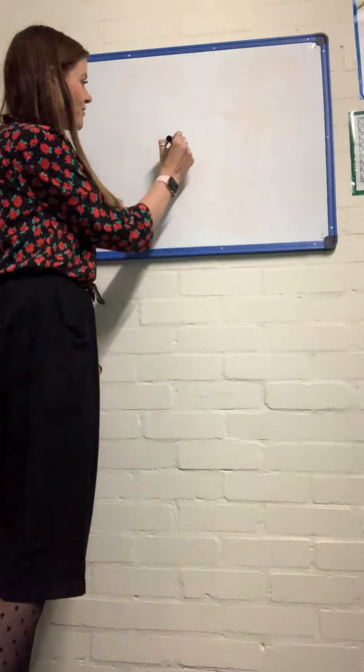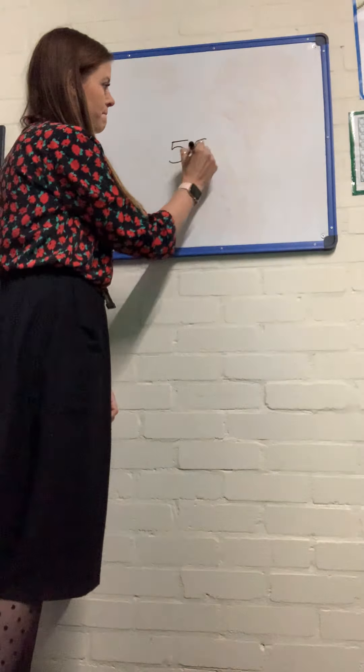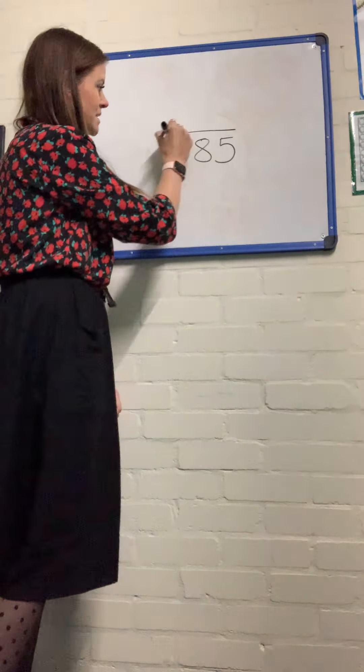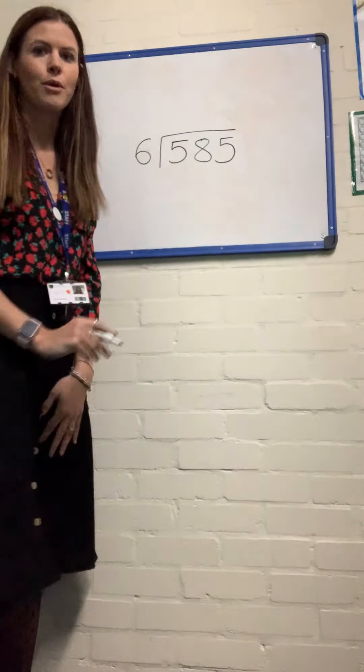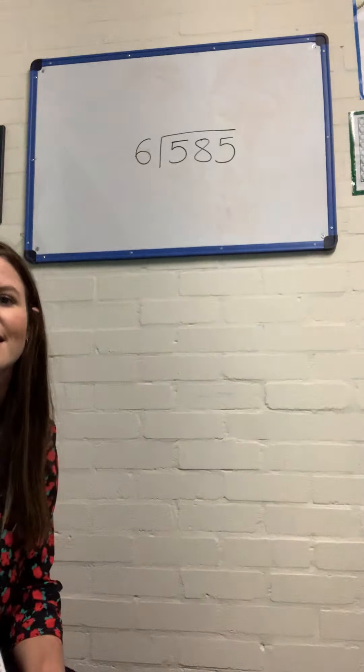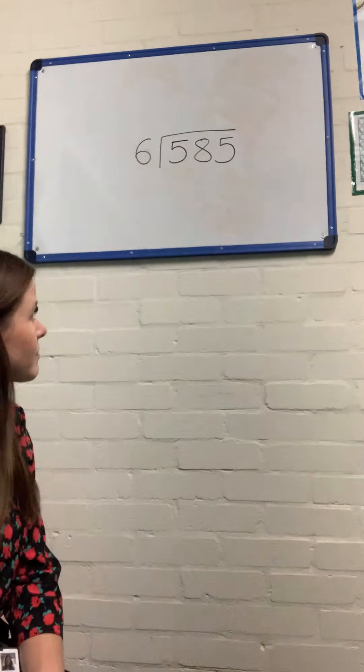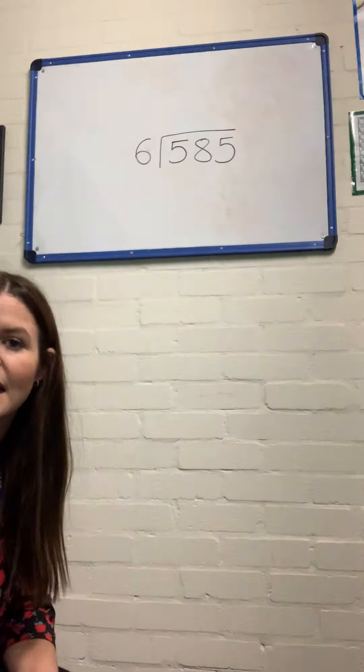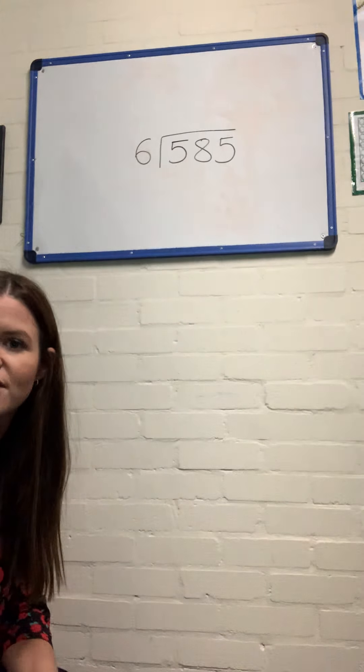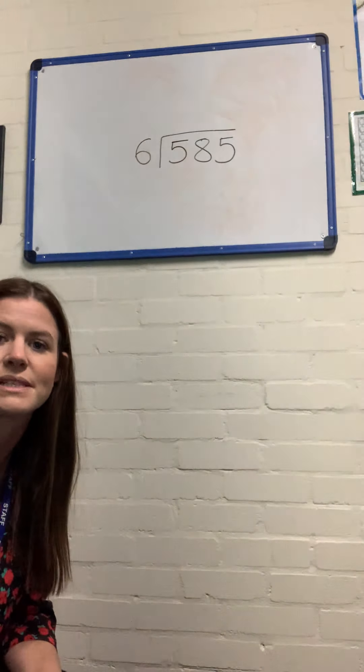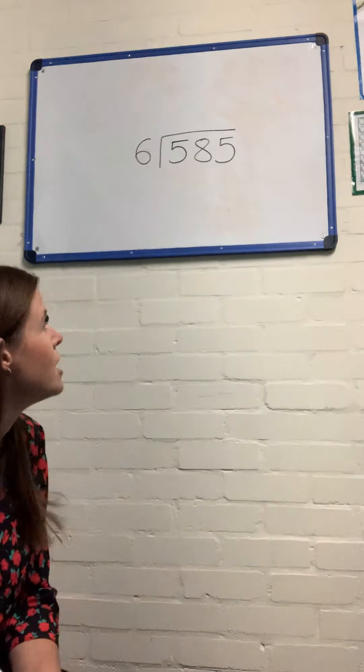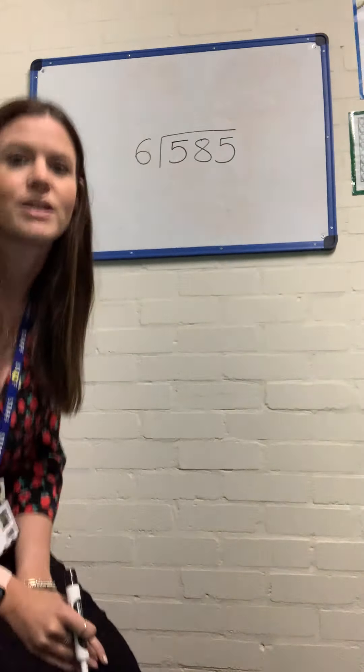So we had 585 and we were dividing by 6. Now we know straight away that 6 isn't going to be an equal divisor for 585 because all numbers in our 6 times tables are even. So how many 6s are in 585?